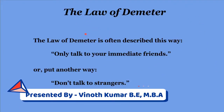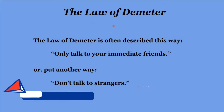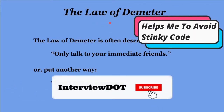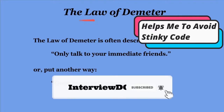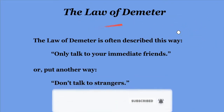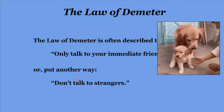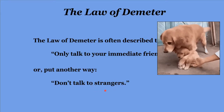Hi friends, in this video I'm going to talk about the Law of Demeter. This law helps me to have good coding practice and helps me to avoid stinky code in my product. In a simple way, what it says is: only talk to your immediate friends. When you try to design a class and write a method, this law is saying only talk to your immediate friends — in another way, don't talk to strangers.